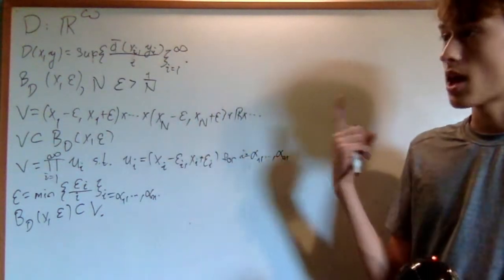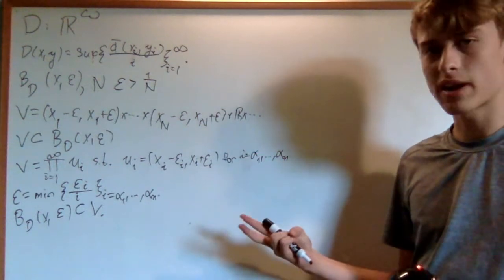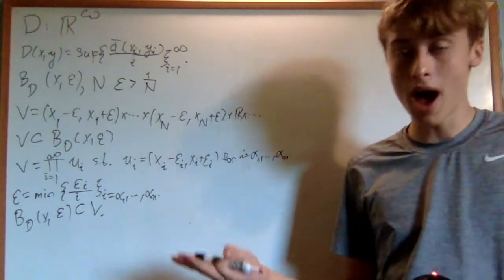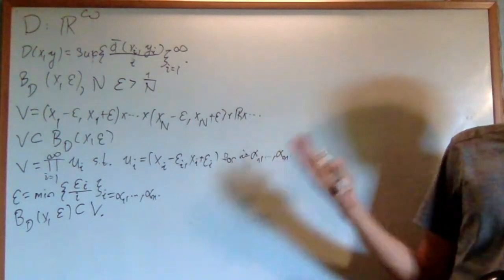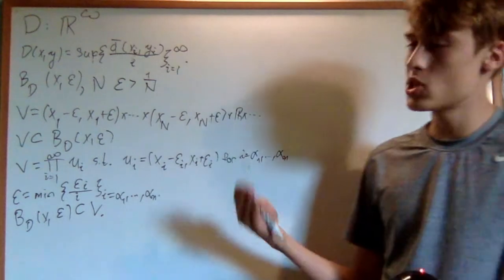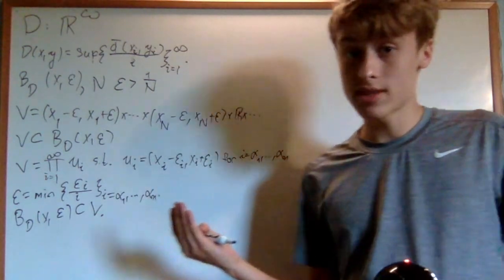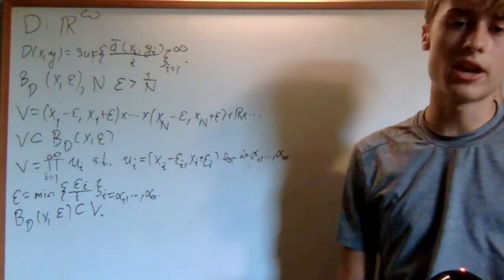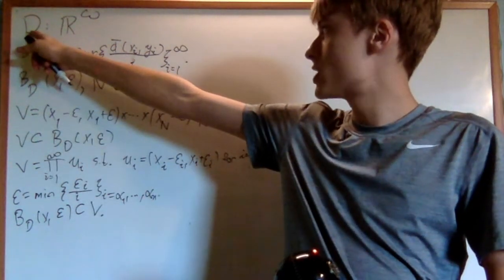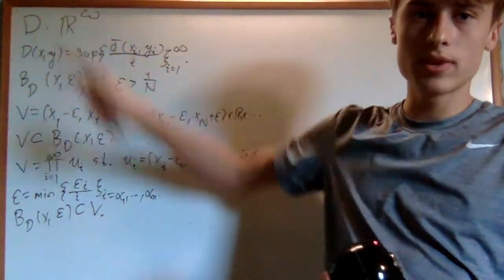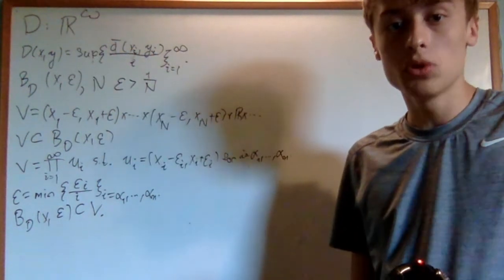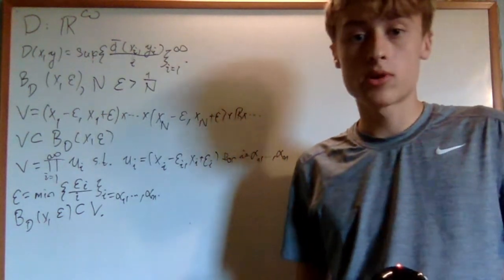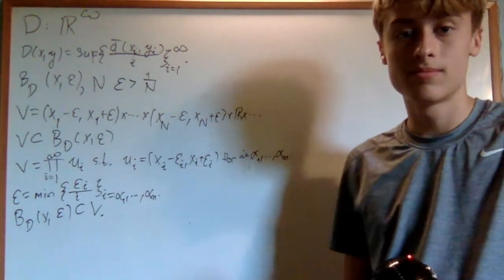So what we covered is metrics, the topologies generated by metrics, that the Euclidean metric generates the Euclidean topology, that there are metrics on ℝ^J that don't generate the same topology, and that there is a metric on ℝ^ω that generates the product topology on it. This idea where a metric generates a topology is known as metrization — we'll look into this further later on, and it's actually a very important idea in general topology.